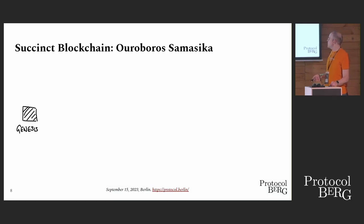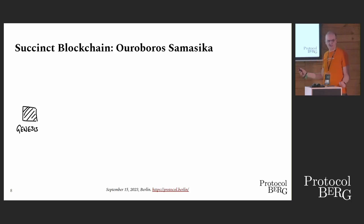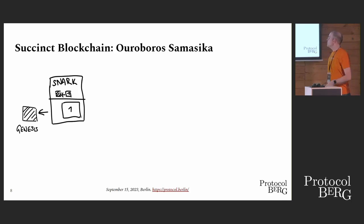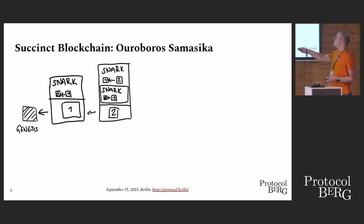Let me describe Ouroboros Samasika, the consensus algorithm used in the Mina Protocol. It's a variation of the Ouroboros family also used in Cardano, and it's proof of stake. Every participant has tokens representing stake, which can be delegated to block producers. Every time slot, there's a stake-weighted lottery for who produces the next block. In Ouroboros Samasika, when you produce a block, you also create a SNARK saying this is a valid extension of the genesis block — so instead of validating all transactions, you just check the SNARK.